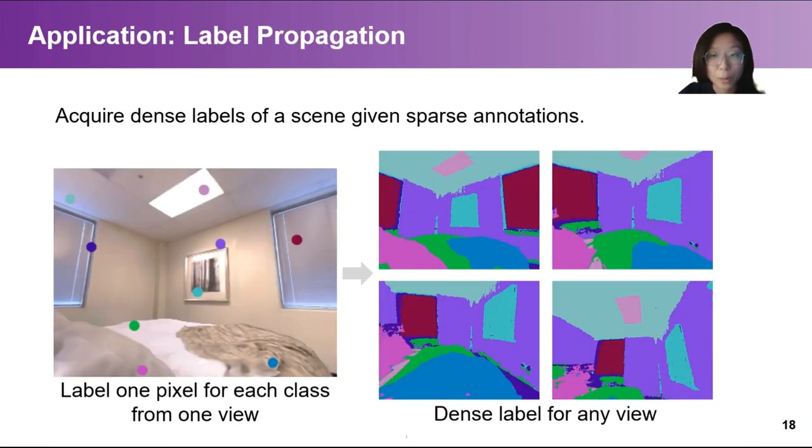The major evaluation in this work is label propagation, since providing dense annotations for a collection of images can be costly. And there could be a lot of redundancies there from the same scene. If we can label only one pixel for each class from one view, and propagate the sparse annotation to derive a dense labeling for any view, then we can save a large amount of annotation effort.